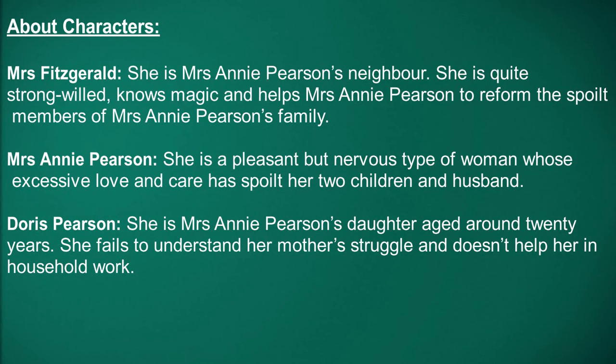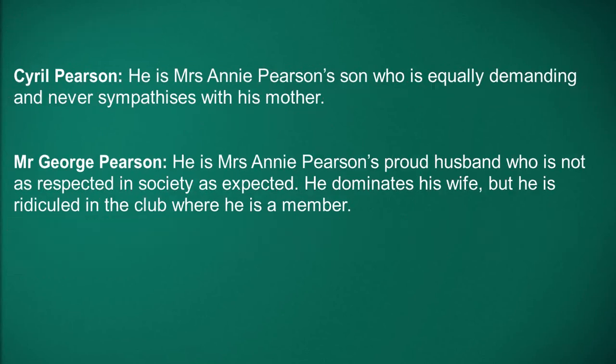Doris Pearson is Mrs. Annie Pearson's daughter, aged around 20 years. She fails to understand her mother's struggle and doesn't help her in household work. Next is Cyril Pearson, Mrs. Annie Pearson's son, who is equally demanding and never sympathises with his mother.